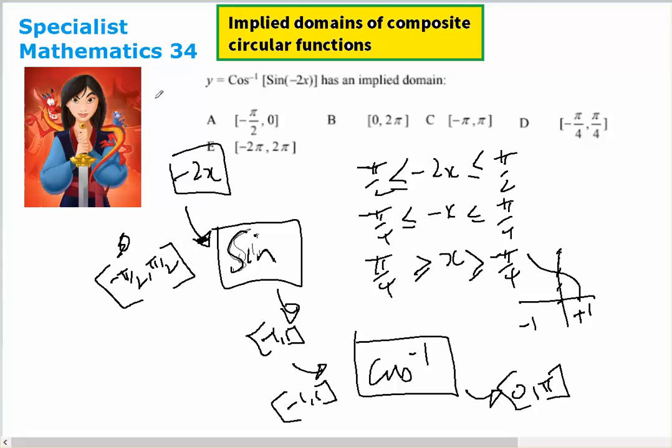So our domain is minus π over 4 to π over 4 inclusive, and our range is 0 to π. That makes D the right answer.